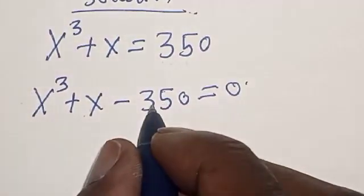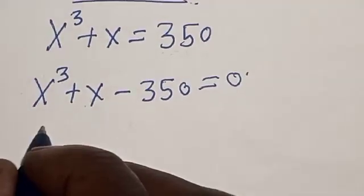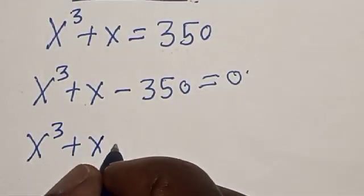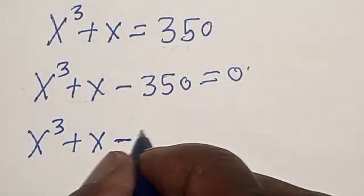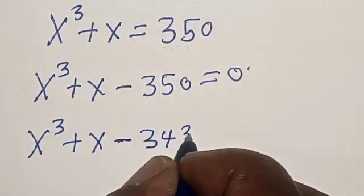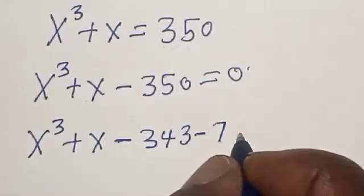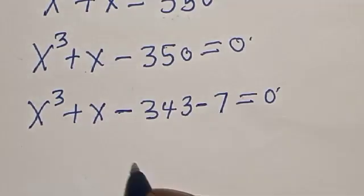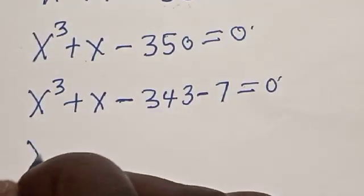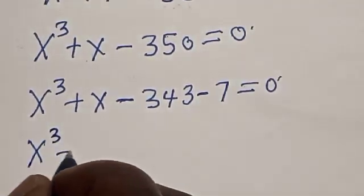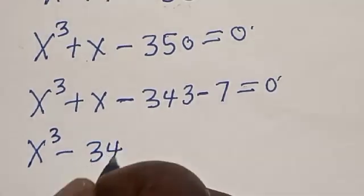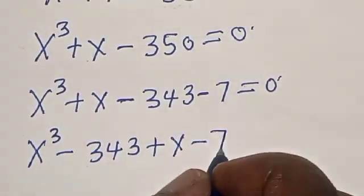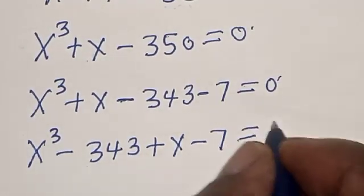Now this 350 can also be expressed as 343 plus 7, so we rewrite the equation as s raised to power 3 plus s minus 343 minus 7 is equal to 0. Let's transform this: s raised to power 3 minus 343 plus s minus 7 is equal to 0.